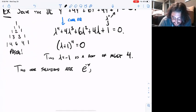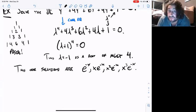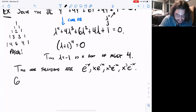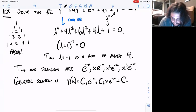So our solutions are: e^(-x), x·e^(-x), x²·e^(-x), x³·e^(-x). Those are the four solutions. Then the general solution by superposition: y(x) = C₁·e^(-x) + C₂·x·e^(-x) + C₃·x²·e^(-x) + C₄·x³·e^(-x). So we're done.